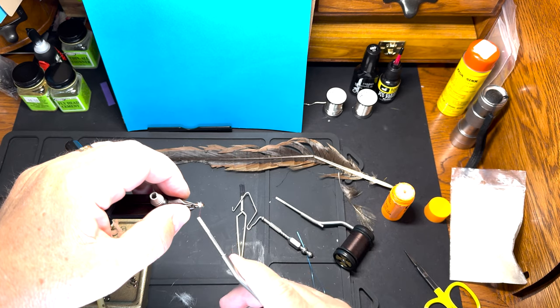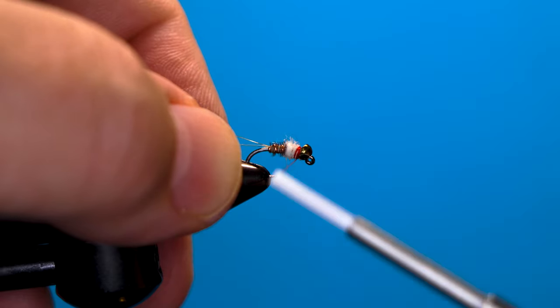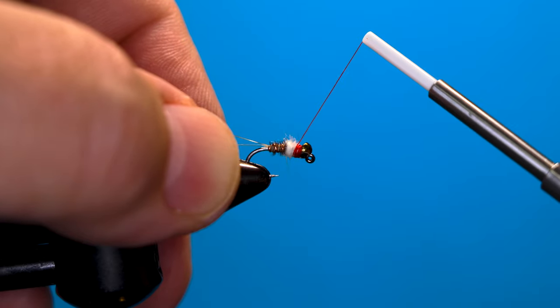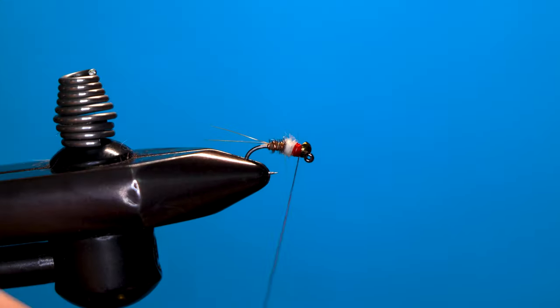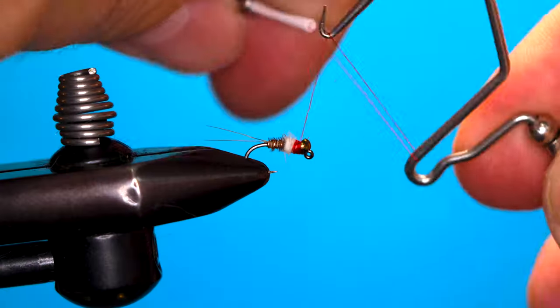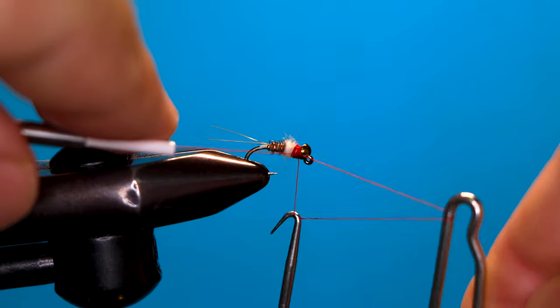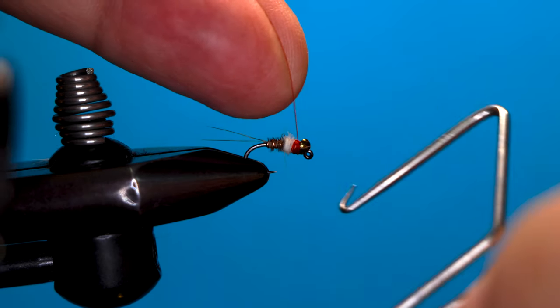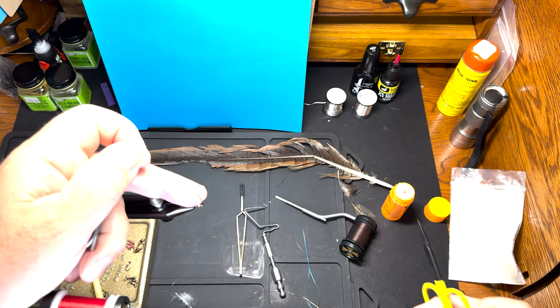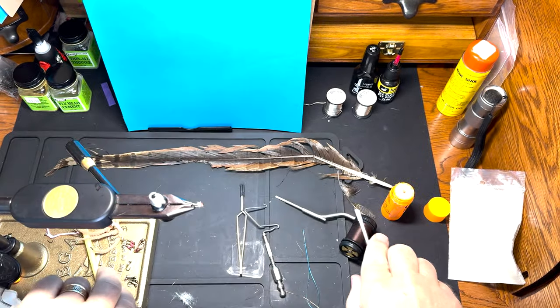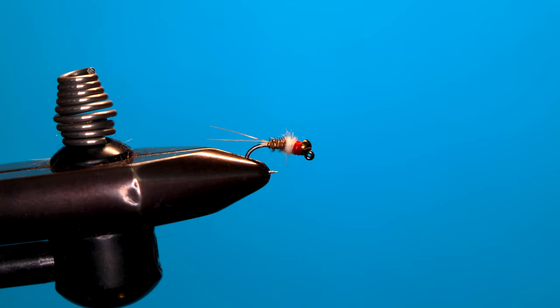We're just going to make a thin but noticeable collar out of the red thread. Whip finish, and just a little bit of head cement and we're good.